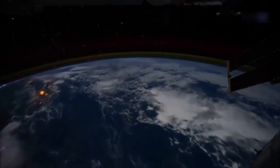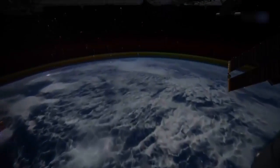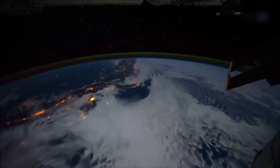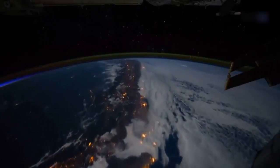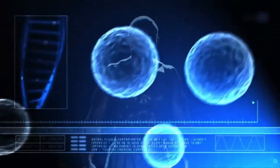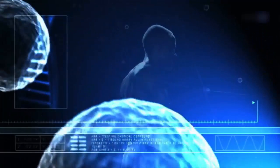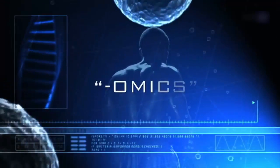But what happens to these processes when we leave the planet? In Earth orbit and beyond where gravity is counteracted by a constant state of freefall and cosmic radiation intensifies, the molecular inner workings of the human body may change. To find out how, NASA has entered a realm of bio-research known as omics.